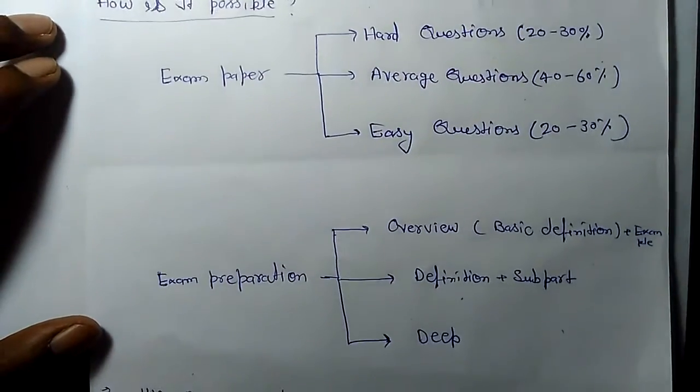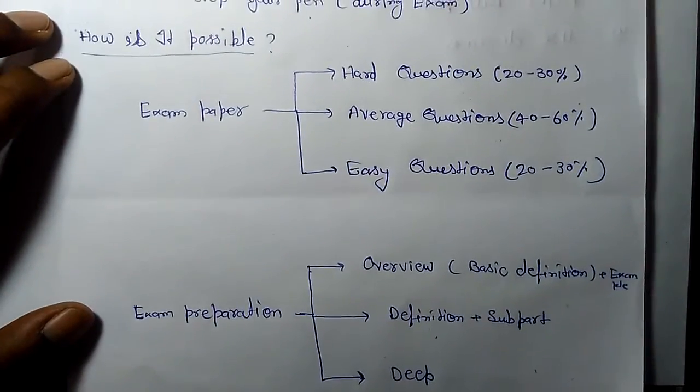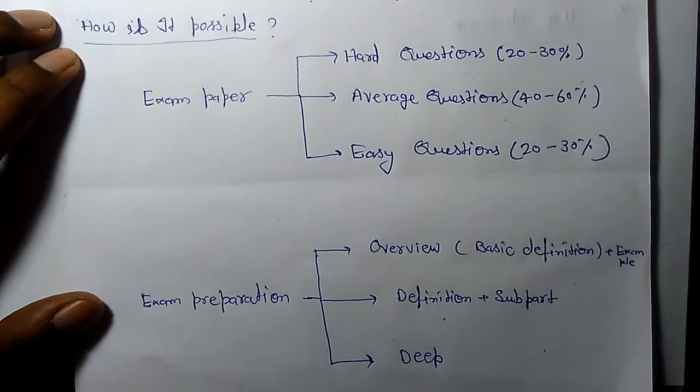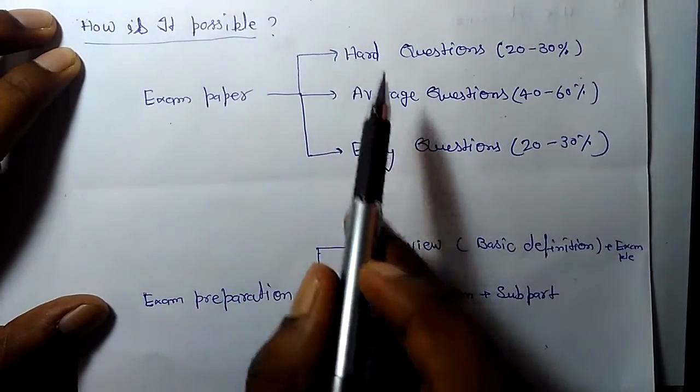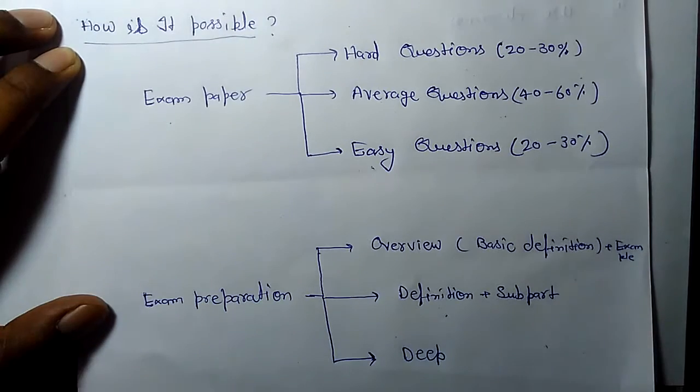First we will learn that exam paper is divided. Any university exam paper is divided in three parts: hard questions, average questions and easy questions.